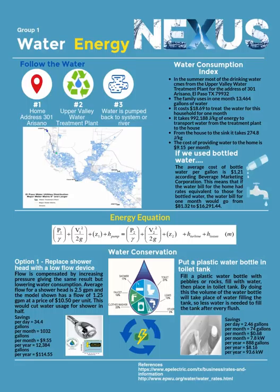We also calculated the energy it takes to make the water flow from the faucet inside of the residence. The energy it needs is 274 joules per kilogram.